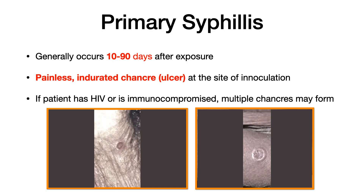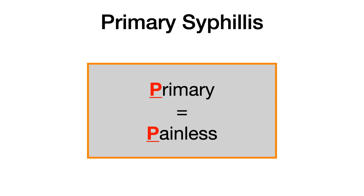If the patient is immunocompromised — for example, with a history of HIV or advanced AIDS — there is a chance that multiple chancres may form, because the immune system is even weaker against an organism it already struggles to recognize due to the lack of proteins on its outer membrane. The key takeaway: primary equals painless. Primary syphilis, painless chancre — that's what you need to remember.